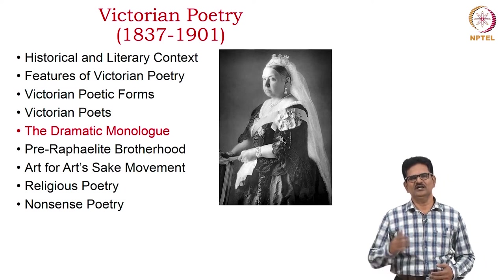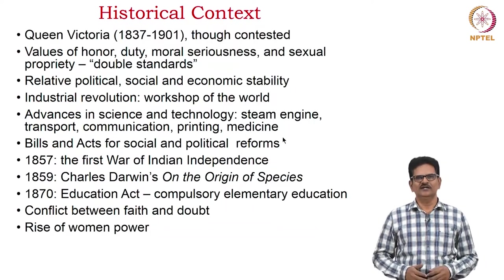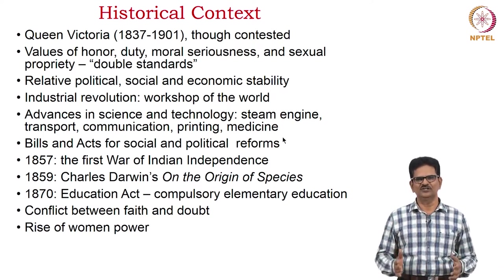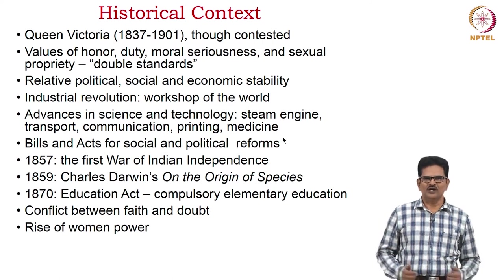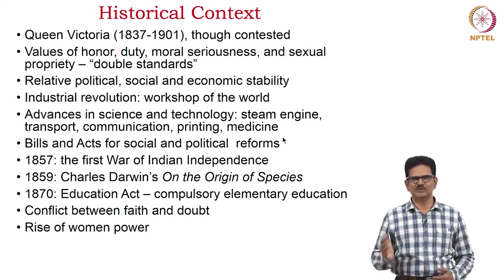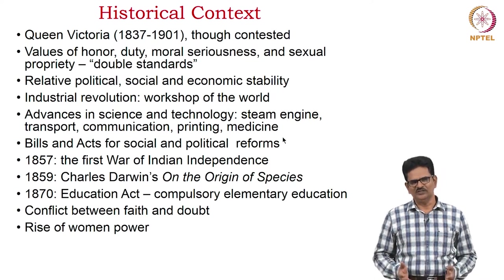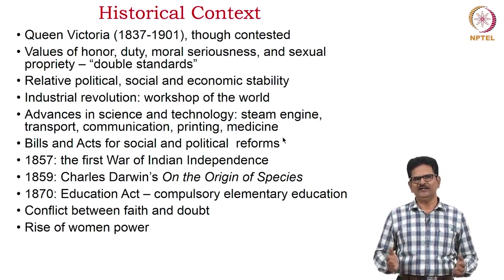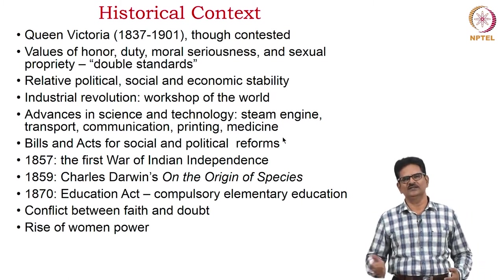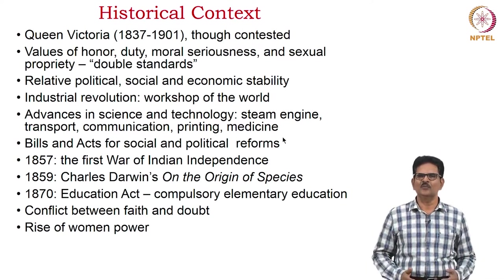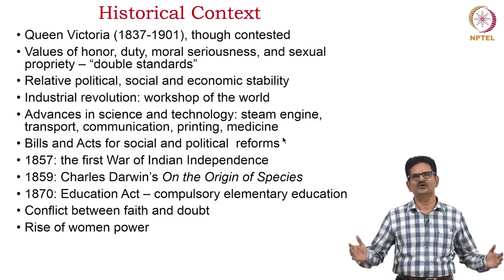One is religious poetry and another is nonsense poetry. The historical context is closely linked with the period of Queen Victoria from 1837 to 1901. Many critics may not agree with this periodization, but generally it serves our purpose. Values of honour, duty, moral seriousness, and sexual propriety were highly valued at this time. But it was well known that many of those Victorians maintained double standards — one in private life and another in public life. There was a relative political, social, and economic stability during this long reign of Queen Victoria.